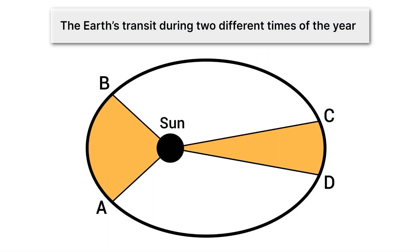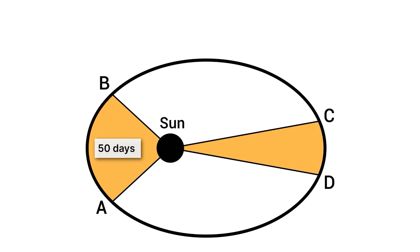To understand Kepler's law, let's consider the Earth's transit during two different times of year. Imagine the Earth going around its elliptical orbit — it takes about a year and travels clockwise. It'll travel from A to B, and then a little later from C to D. These two regions are drawn so that they take the same amount of time — about 50 days each.